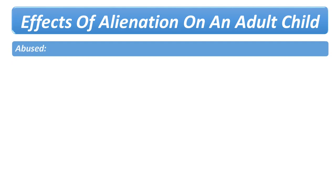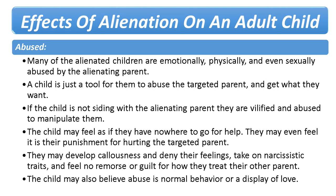Abuse. Many alienated children are emotionally, physically, and even sexually abused by the alienating parent. A child is used as a tool to abuse the targeted parent and get what the alienating parent wants. If the child does not side with the alienating parent, they are vilified and abused. If the child believes the targeted parent also does not love them, they may feel they have nowhere to go for help, and may feel the abuse is their punishment for hurting the targeted parent. To cope, the child may develop callousness, denying feelings of guilt or remorse for being cruel to the targeted parent. The child may also come to believe that abuse is normal behavior or a display of love, setting them up for abuse in adult relationships.